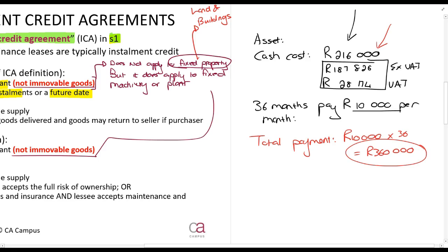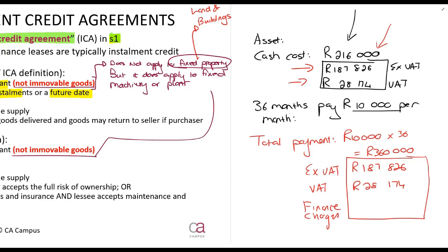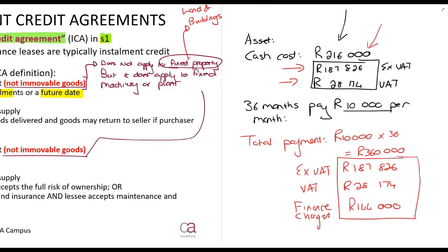So what is that total cost comprised of? It will be comprised of the ex-VAT amount of 187,826 rands and the VAT amount — those will be exactly the same as before. The difference is the finance charges or interest. So 144,000 rands is finance charges. Let's see if this meets the requirement.